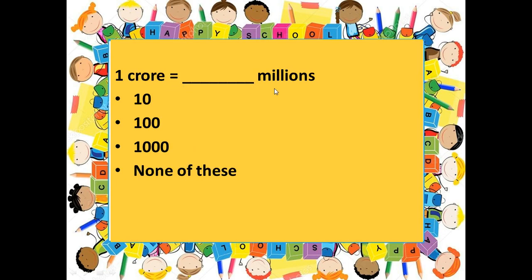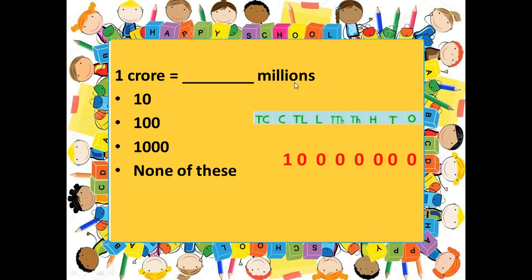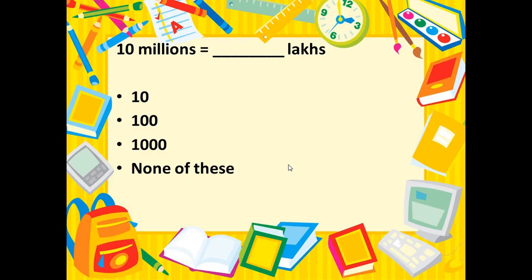The next question is: one crore is equal to how many millions? We first write one crore in the Indian system. We want to express this in terms of millions, which is used in the international system. In the international system, the places are: ones, tens, hundreds, thousands, ten thousands, hundred thousands, millions, ten millions. You can clearly see that one crore has ten millions in it, so our answer is ten.